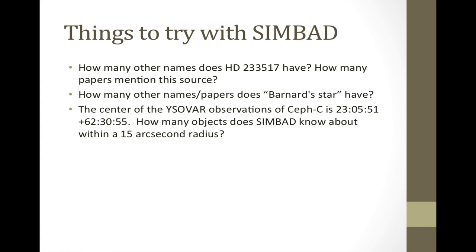Here are some things to try with SIMBAD: How many synonyms or aliases does HD 233517 have, and how many papers mention this source? How many other names or papers does Barnard's Star have? The center of the YSO observations for CFC is 23h 05m 51s, 62° 30' 55" — how many objects does SIMBAD find within a 15 arc-second radius? I'll make another video about how to read scientific papers, which is the next step.